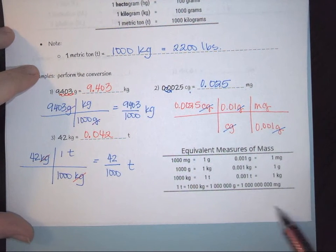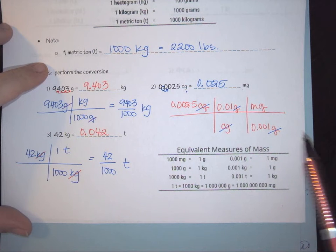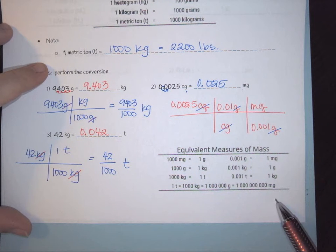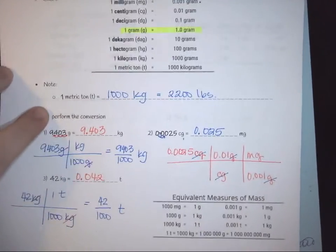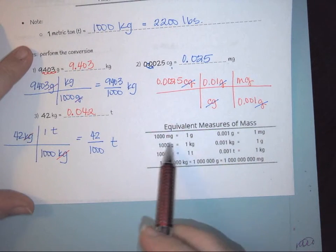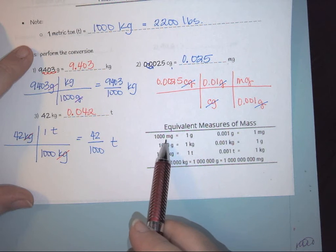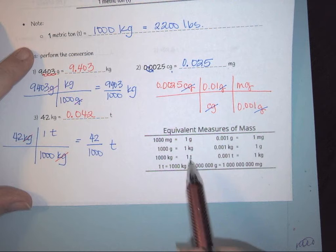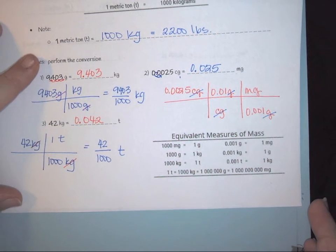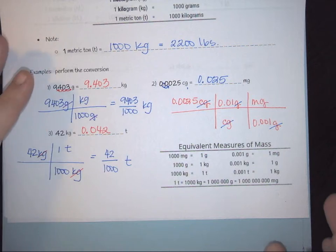There are also equivalent measures of mass shown in a reference table. This is similar to the original chart but presented differently — for example, showing one gram as the base and then listing how many milligrams are in one gram. You can take a screenshot and use this as a reference however you choose.